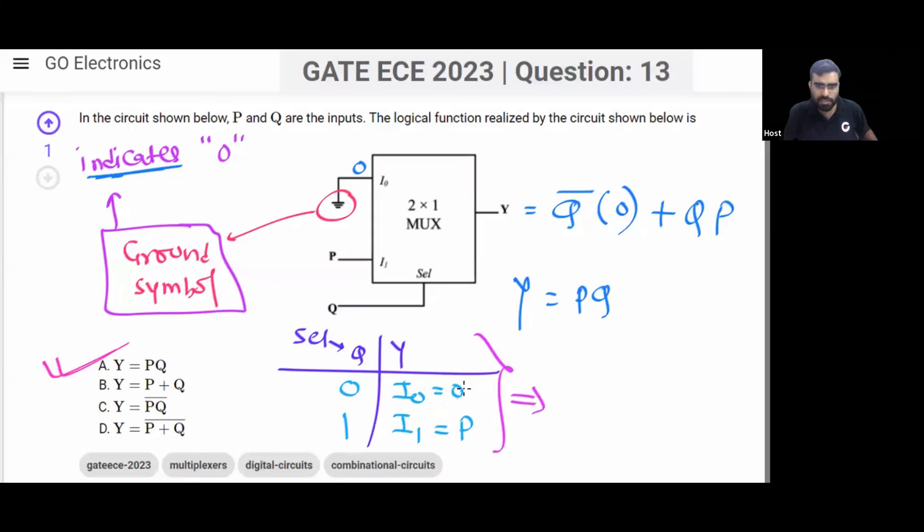From this compact truth table, you can create Y, that is equal to Q̄·0 + Q·P. So finally your answer will be PQ.